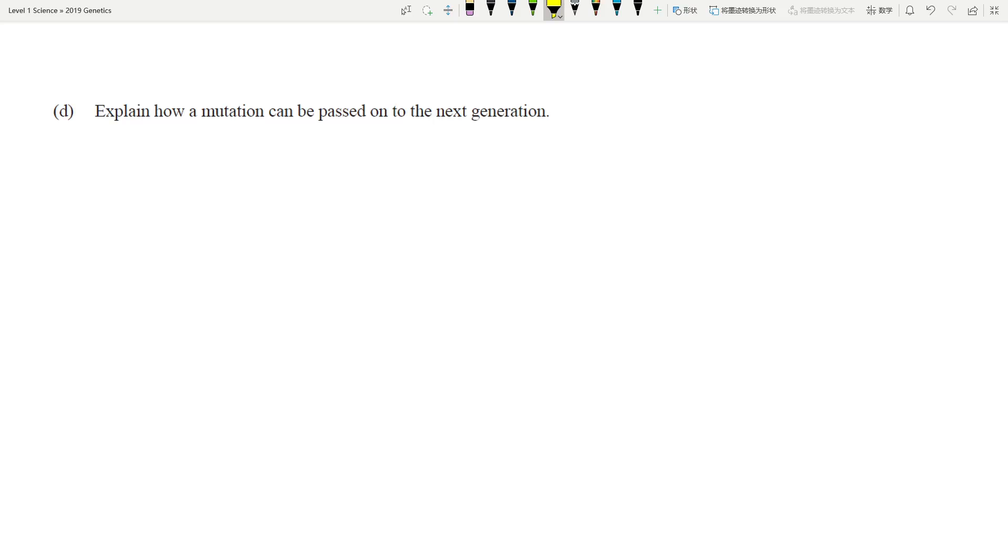Let's look at the last question. Explain how a mutation can be passed on to the next generation. I normally use this example - this is in one of the old school exams. Let's say if a teacher becomes deaf because his class is too loud, would that particular - if that teacher has a child, would the child be deaf when he or she was born? Everyone in my class will be able to tell me of course that person will be normal because the deafness was caused by an environmental factor.